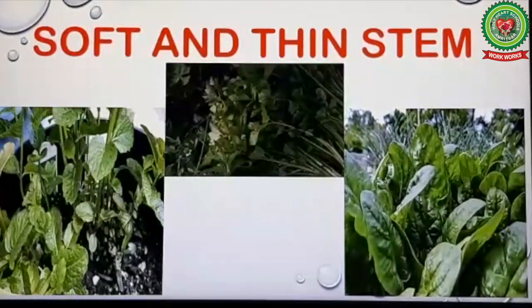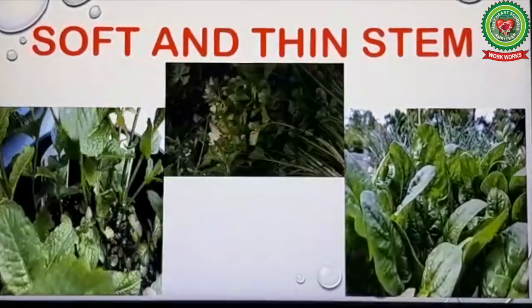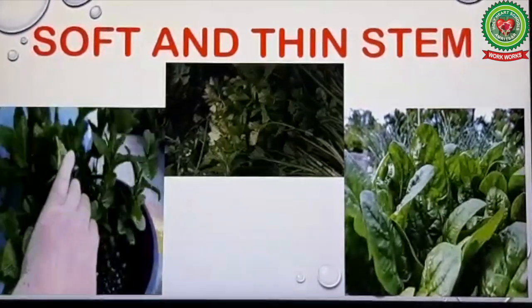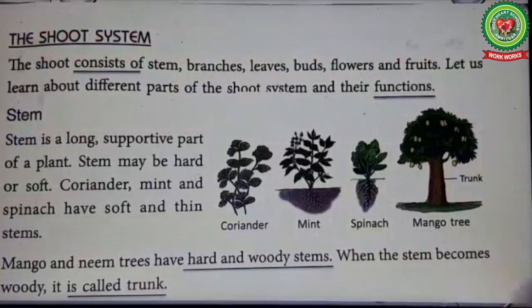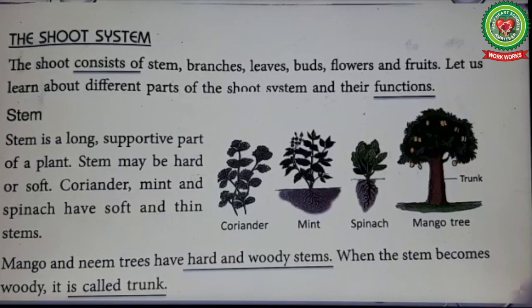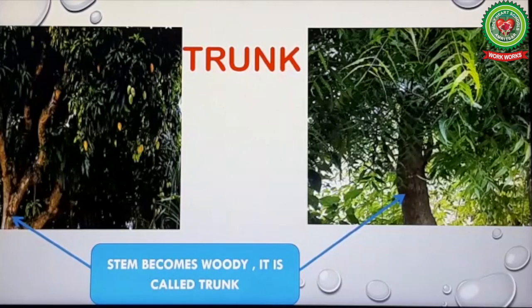Stem can be of different size, color, or shape — it may be soft or hard. Mango and neem trees have hard and woody stems. When the stem becomes woody, it is called trunk. Underline this term: hard and woody stems are called trunk. Stems of big trees are thick, strong, and woody. They are covered in bark. This type of stem is called trunk.